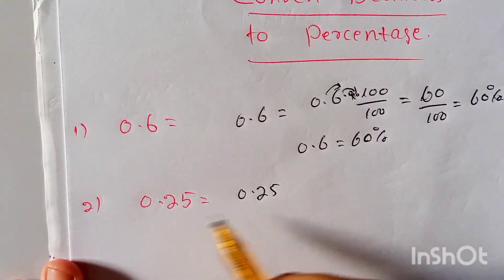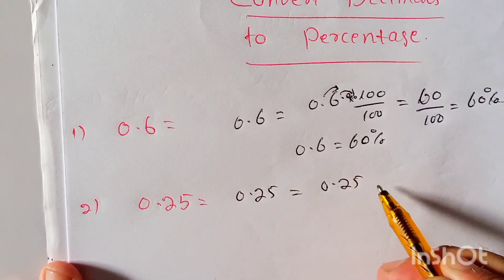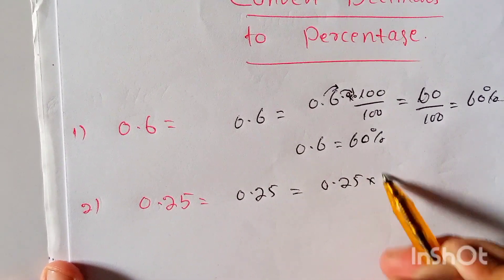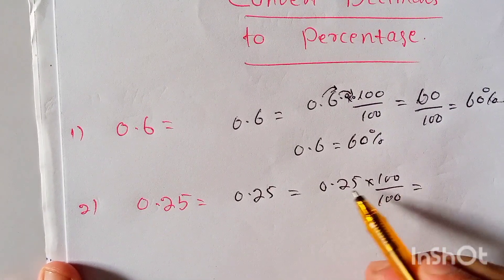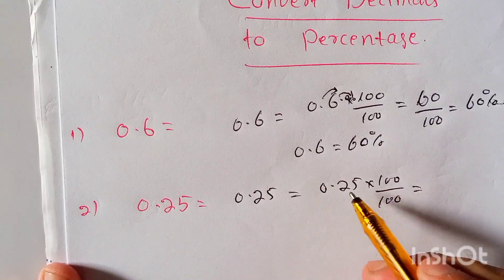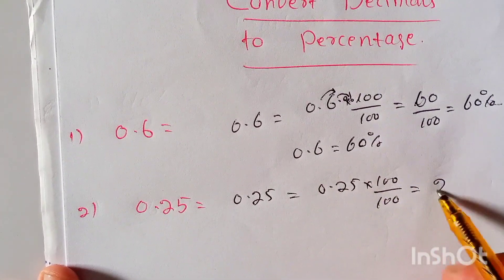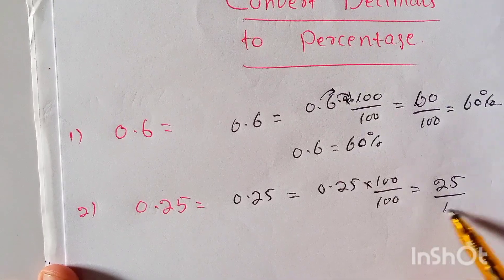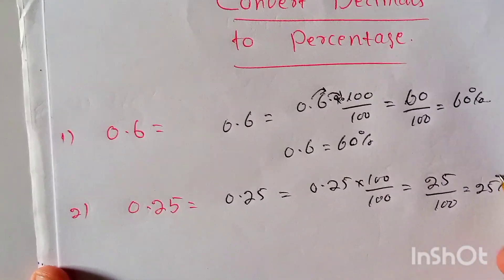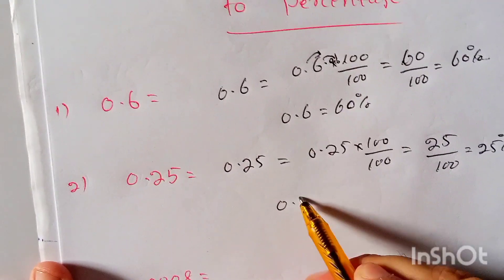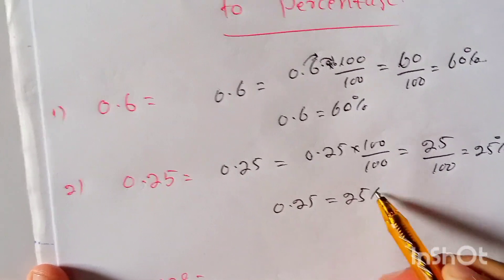So what is 0.25 in percentage? So 0.25 is equal to 0.25 multiplied by 100 and divided by 100. To multiply 0.25 by 100, we will carry the decimal point two places from left to right, which is equal to 25/100, or we can write it as 25 percent. So 0.25 is equal to 25 percent. This is the final answer.